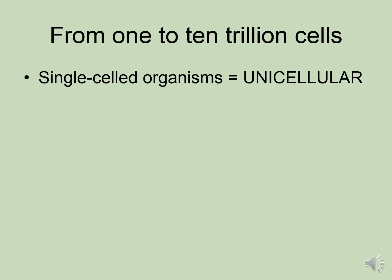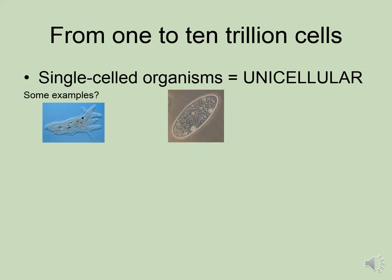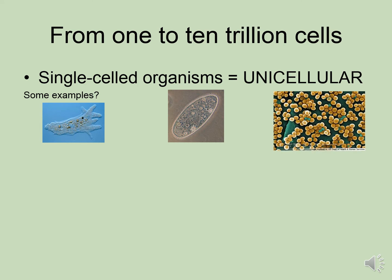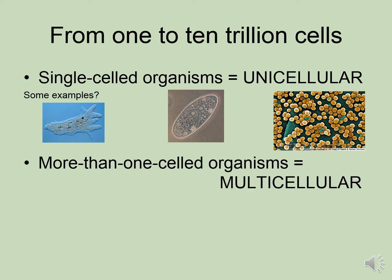For some organisms, the cell is the highest form of organization. We call these single-celled organisms unicellular. Examples are things like amoebas, paramecia, and bacteria. For all of these single-celled organisms, the cell is the highest form of organization.